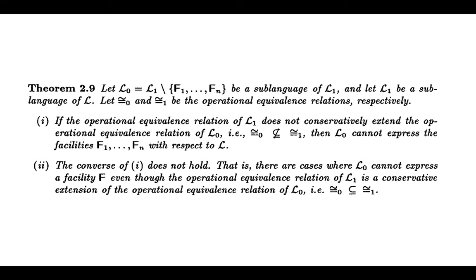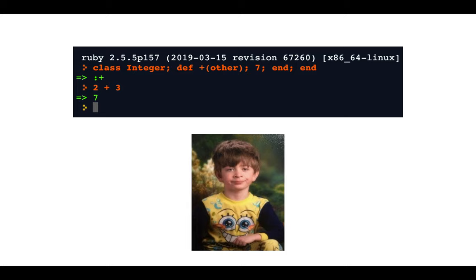The motivation for this first theorem: it gives you a way to prove that a language feature is not expressible. If you can show that adding a feature breaks an observational equivalence, you know that feature can't be expressed with a macro — it's a genuinely expressive change, not encodable as syntactic sugar. And it's easy to show: just give me one context and two expressions that were the same before but are distinguished after.